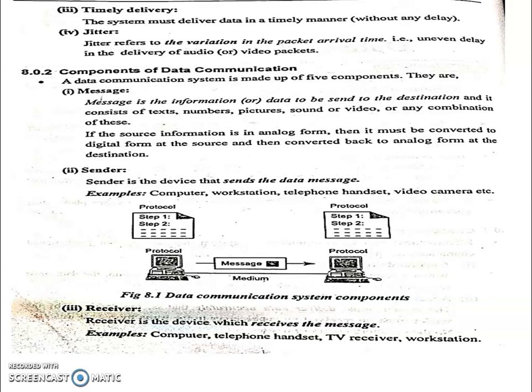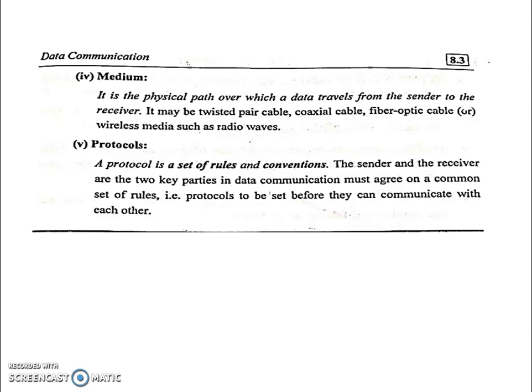Sender is the device that sends the data message. Receiver is the device which receives the message. Medium is the physical path over which data travels from sender to receiver. It may be twisted pair cable, coaxial cable, fiber optic, or wireless medium.